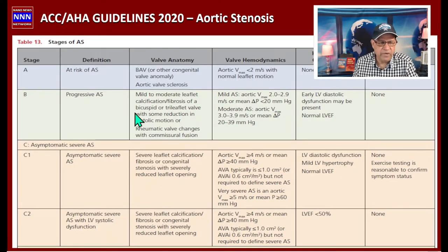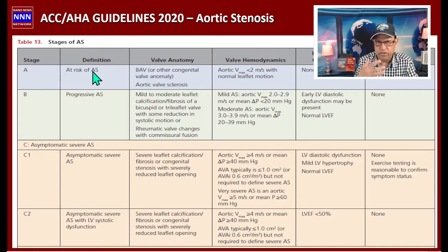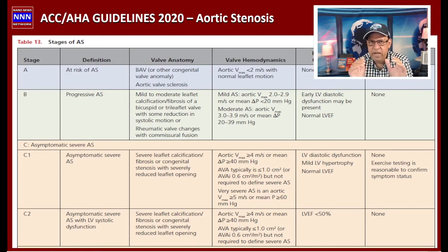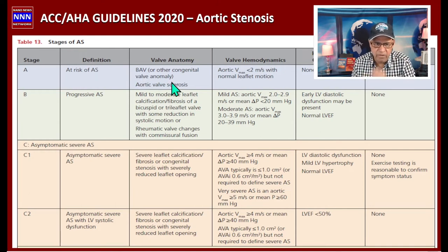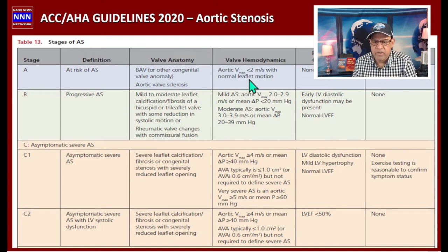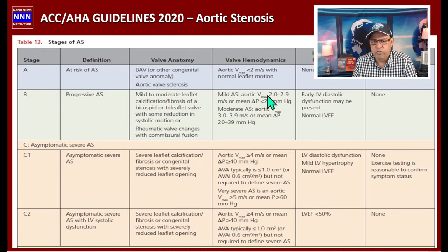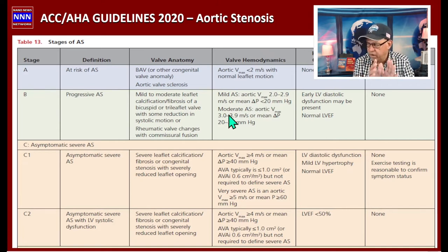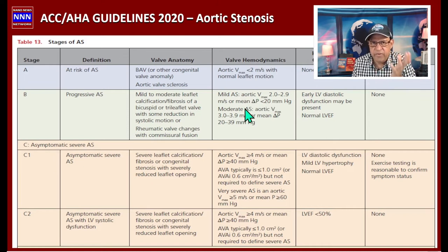Aortic stenosis is divided into various stages. Stage A is risk of aortic stenosis — slow progressive development without symptoms or end organ damage, seen in patients with bicuspid aortic valve or aortic sclerosis. Velocity is generally less than 2 meters per second with normal leaflet motion. Stage B is progressive aortic stenosis where velocity is 2.0 to 2.9 meters per second and mean gradient is less than 20 mmHg. These patients are followed regularly — echocardiogram every couple of years monitoring velocity, LV size, ejection fraction, and valve area.